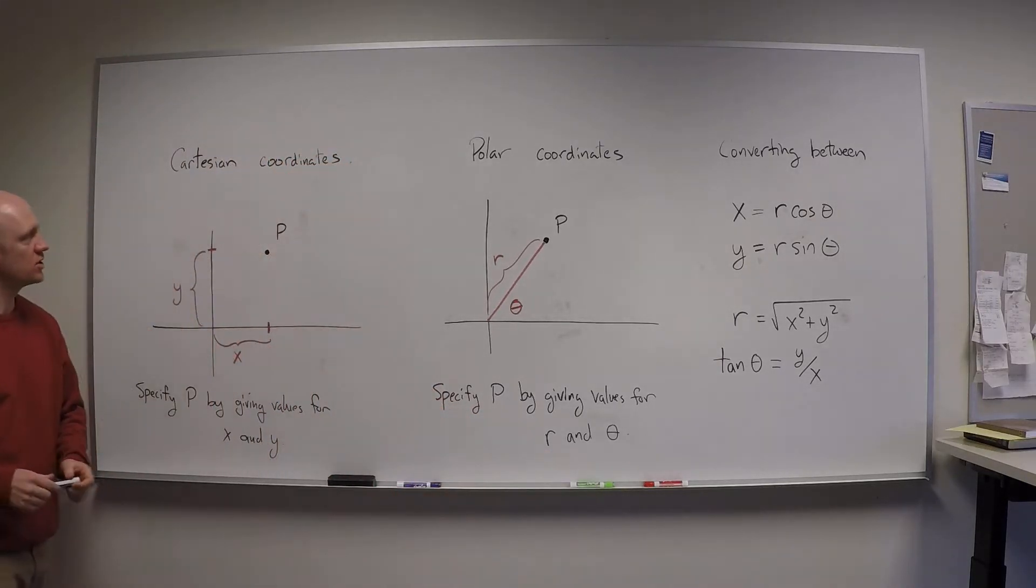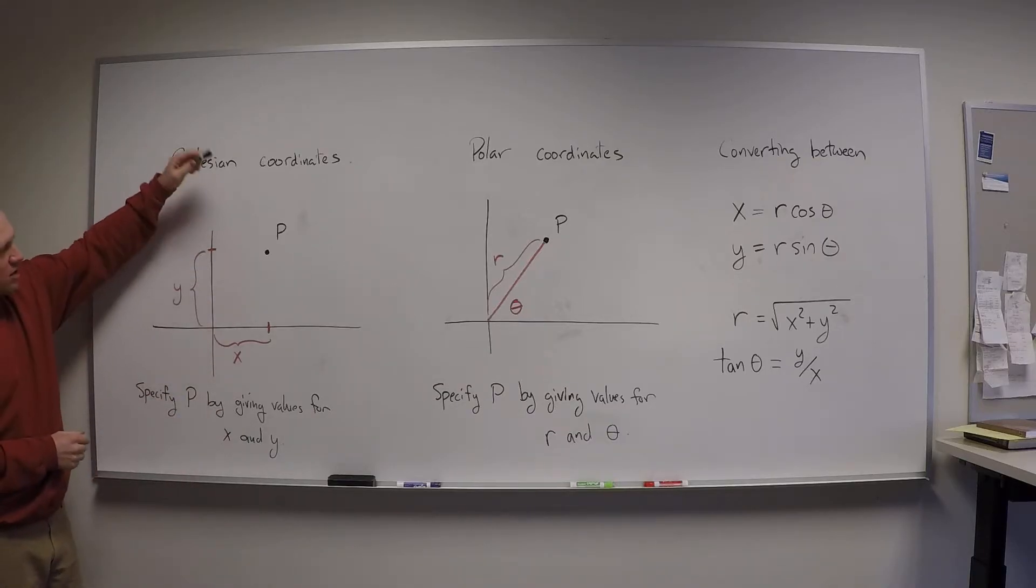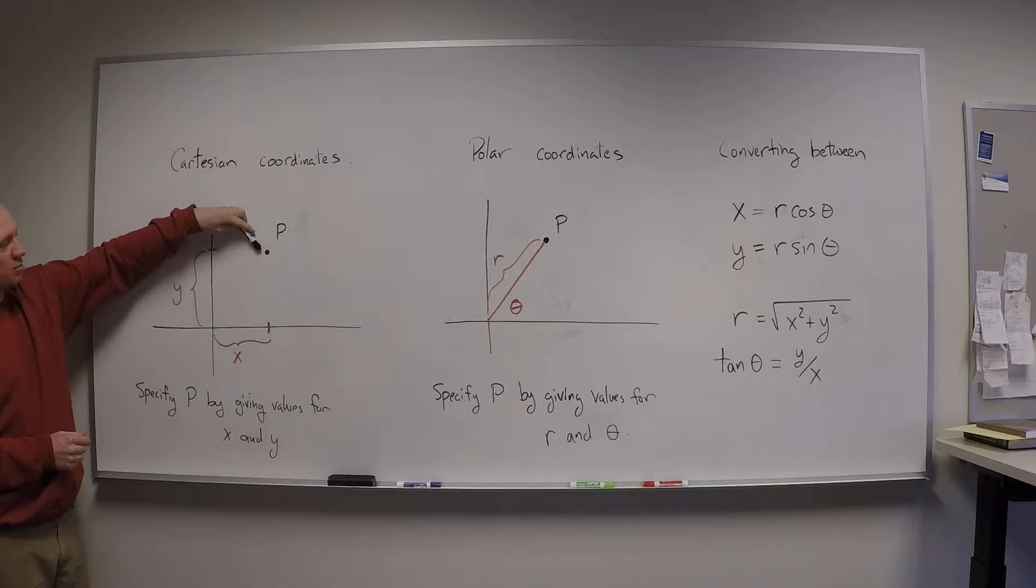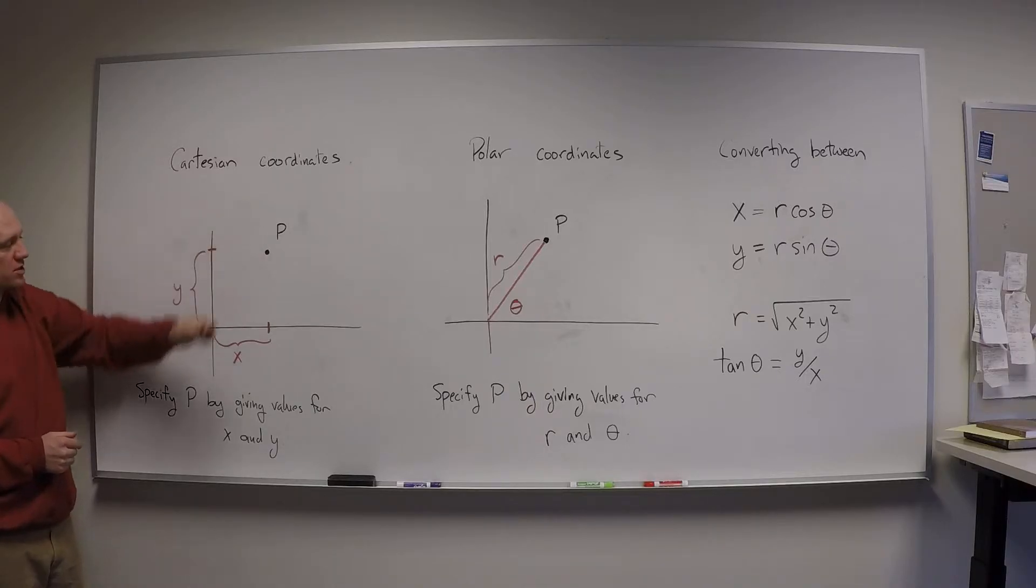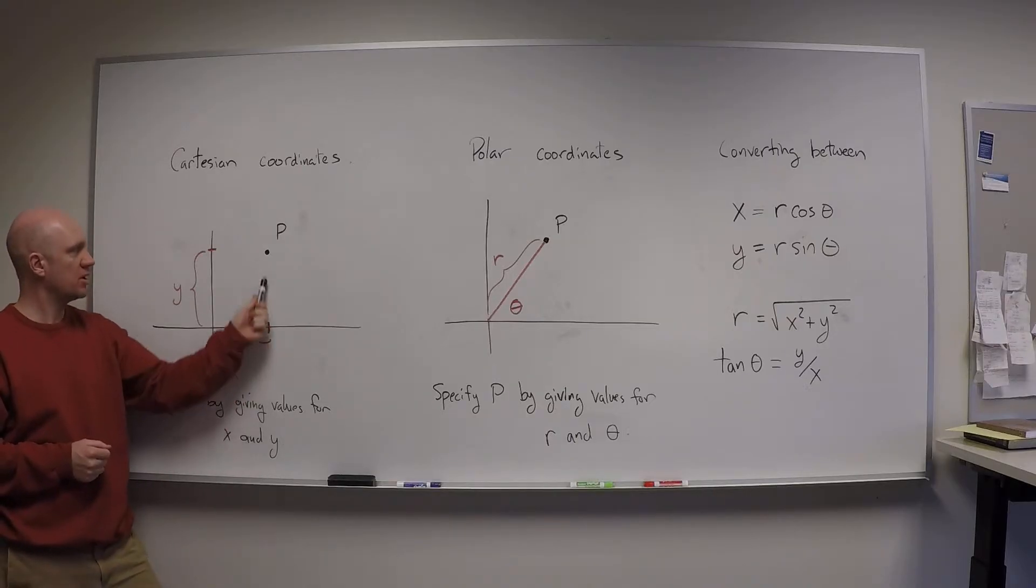Let's talk about polar coordinates. So you're familiar with Cartesian coordinates. You think about specifying a point in the plane via the Cartesian coordinates by simply saying how far along the x-axis I have to go and how far up the y-axis I have to go in order to get to the point.